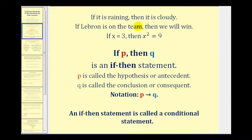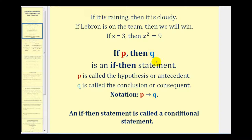Here are three examples of if-then statements: if it is raining then it is cloudy; if LeBron is on the team then we will win; if x equals three then x squared equals nine. In general, if P then Q is an if-then statement where P is called the hypothesis or antecedent and Q is called the conclusion or consequent.